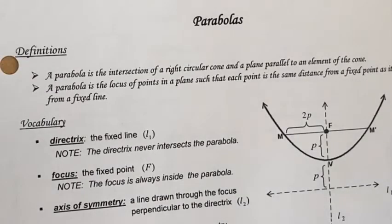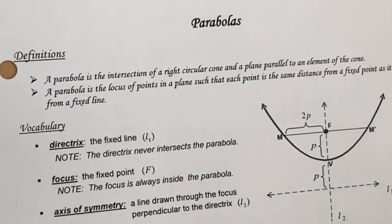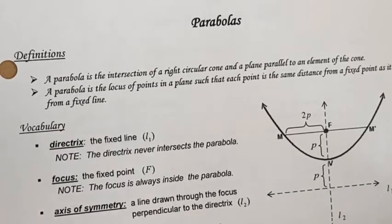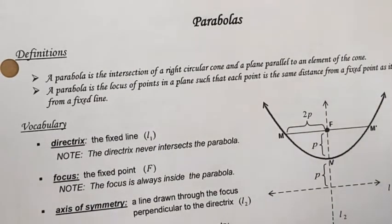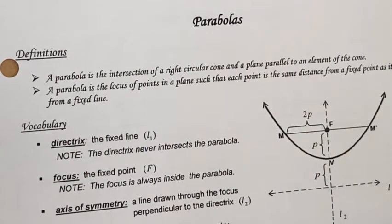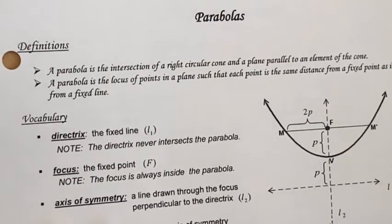Today we're going to learn about parabolas. A parabola is the intersection of a right circular cone and a plane parallel to an element of the cone. A parabola is the locus of points in a plane such that each point is the same distance from a fixed point as it is from a fixed line.